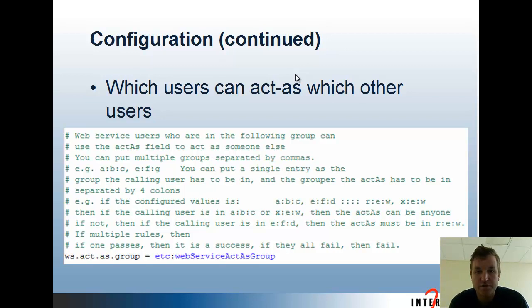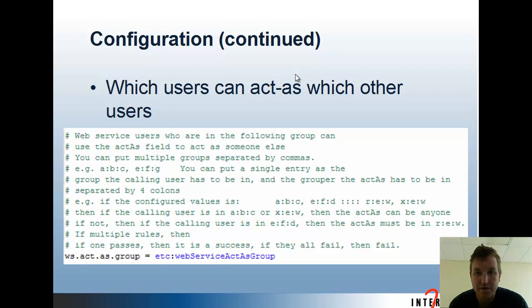You can also configure which users can act as other users. With ws.act.as.group, you can say either people in that group can act as anybody, or you could specify which group they're allowed to act as, so that they can't act as administrators. You would do this for applications where users need to see access from Grouper that they would see if they logged in. The service credential the application uses authenticates to the Grouper web services, but tells the web services to act as the user who logged in to the application.